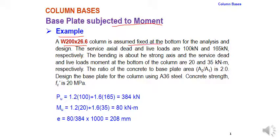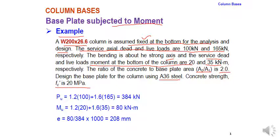We have a W200×26 column assumed fixed at the bottom for analysis and design. Since it is fixed, it is a moment base plate and the moments need to be developed and transferred to the base plate. The service axial dead and live loads are 100 kN and 165 kN respectively. The bending is about the strong axis, and the service dead and live load moments at the bottom of the column are 20 and 35 kN·m. The ratio A2/A1 = 2, using A36 steel, and fc' = 20 MPa.